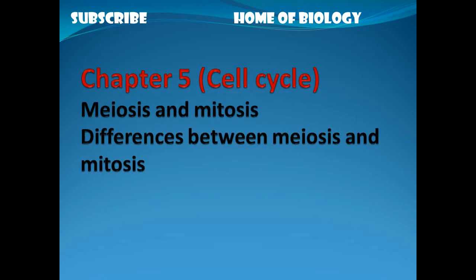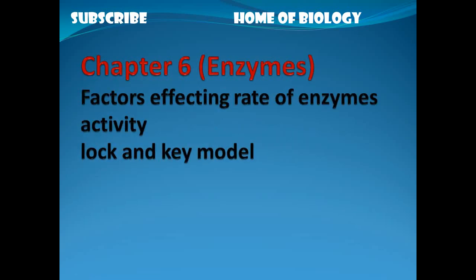Chapter 5 is the Cell Cycle. The main topics are mutations, mitosis, and meiasis (meiosis). These are key concepts to study carefully in this chapter.